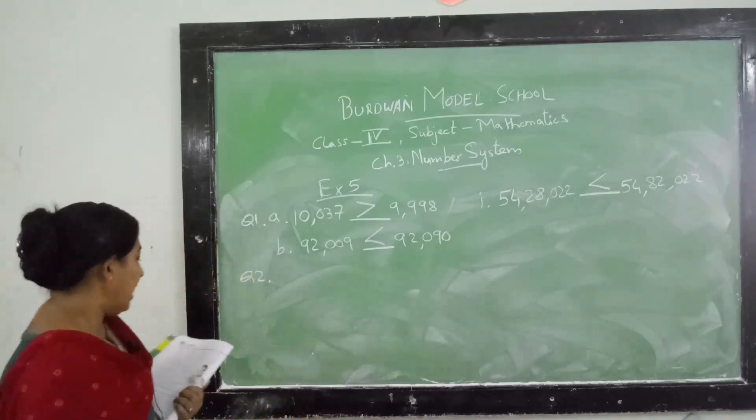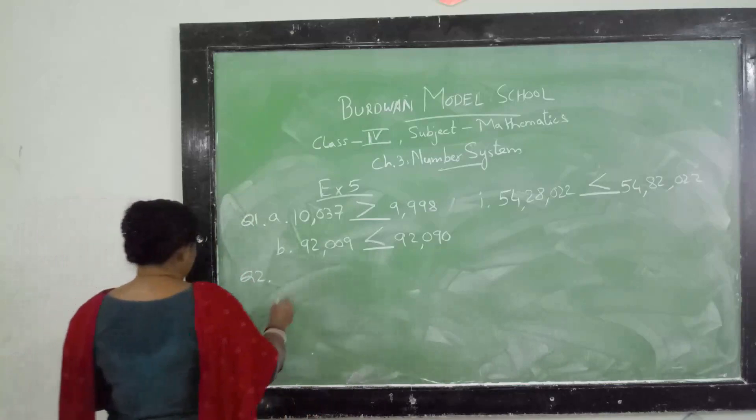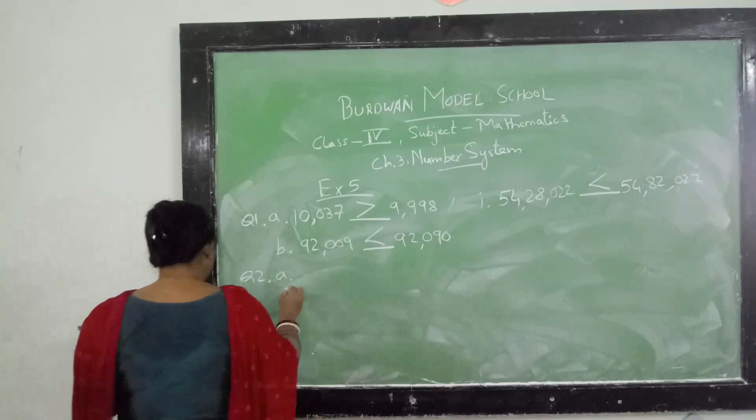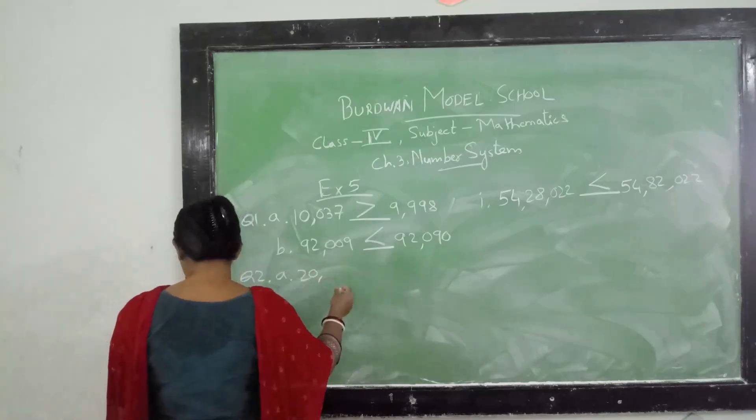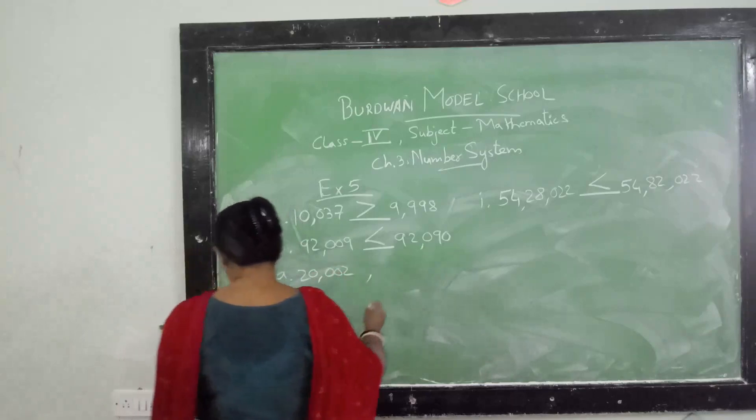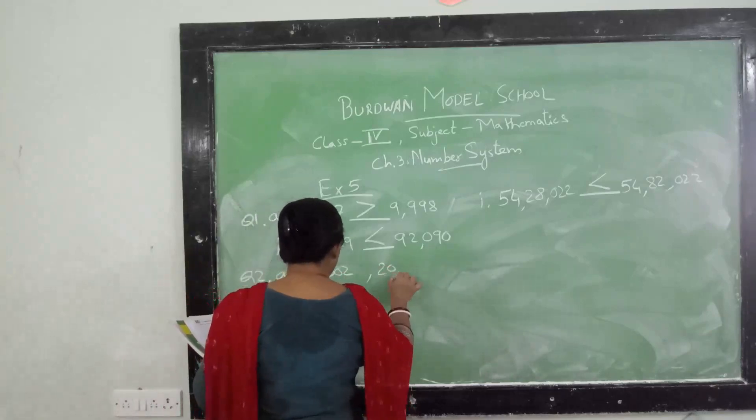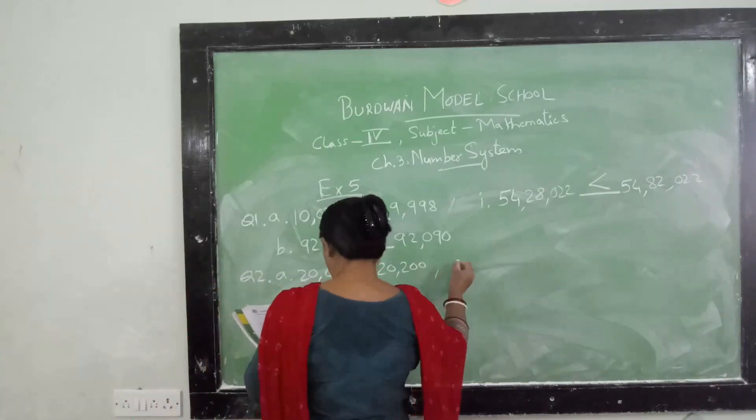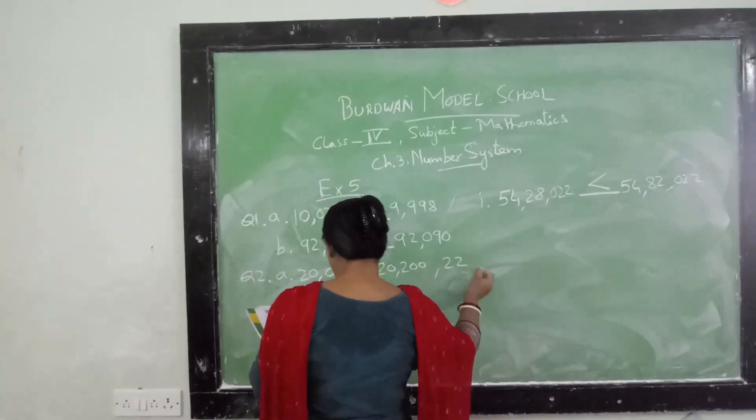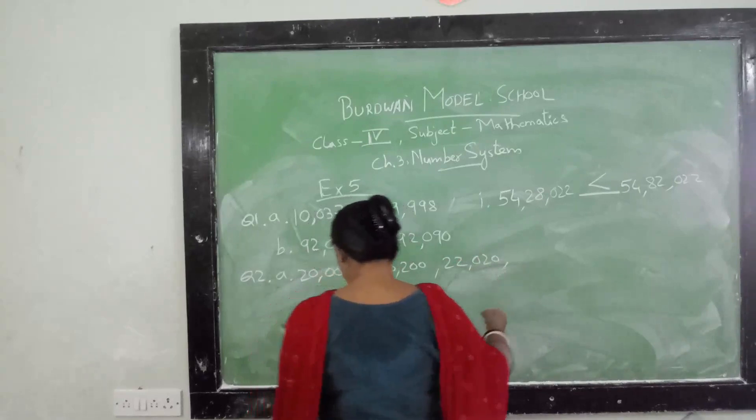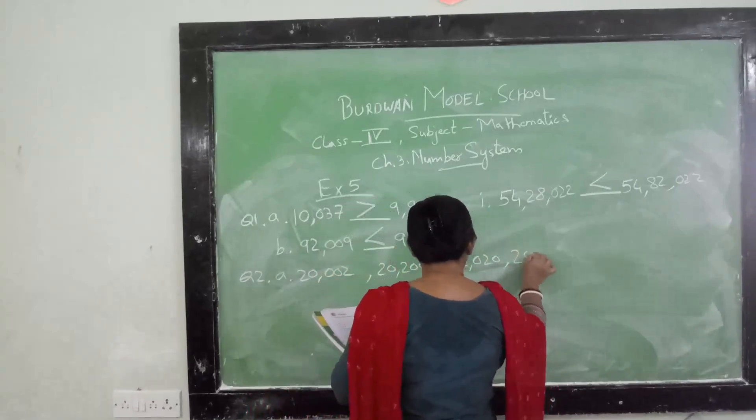Let's do number a. It is given 20,002, next one is given 20,002, next one is given 20,200, next one is given 22,020, next one is given 20,000.